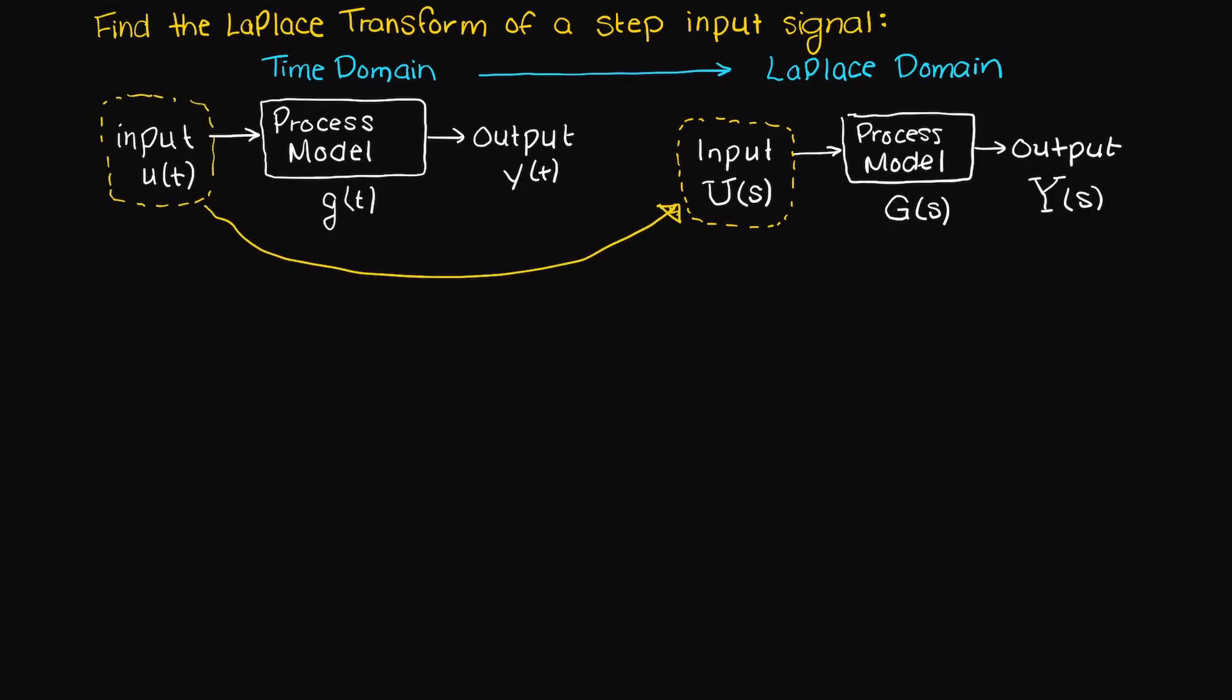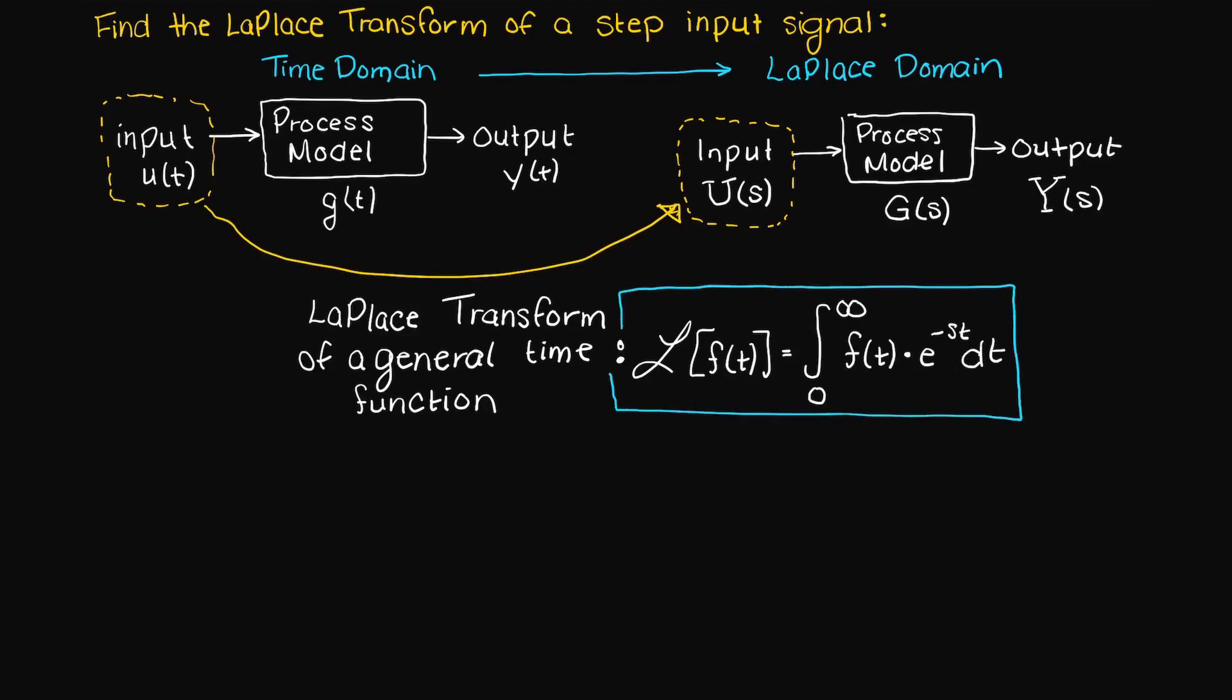So we need to take our input signal and convert it to the Laplace domain which we represent with capital letters and our time variable becomes the complex variable s. If you remember, the Laplace transform of a general time function is the following, and our input step signal is represented mathematically as a time function like so.